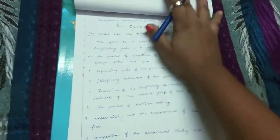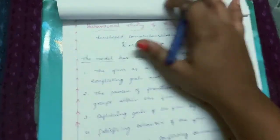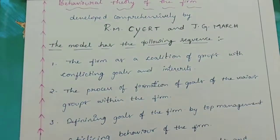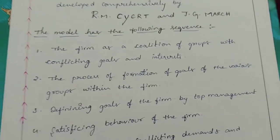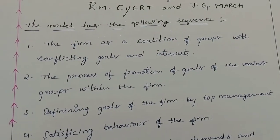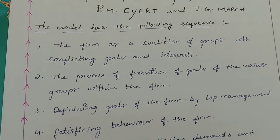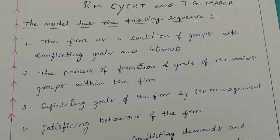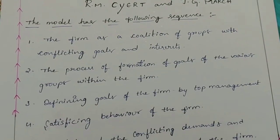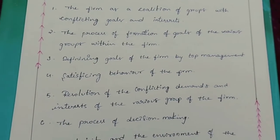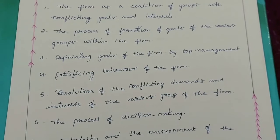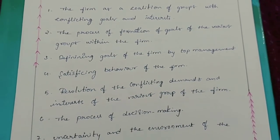The behavioral theory of the firm was developed comprehensively by R. M. Cyert and J. G. March. The model has the following sequence: the firm has a coalition of groups with conflicting goals and interests; the process of formation of goals of the various groups within the firm; defining goals of the firm by top management; satisfying the behavior of the firm; resolution of conflicting demands and interests of the various groups; the process of decision making; and uncertainty and the environment of the firm.